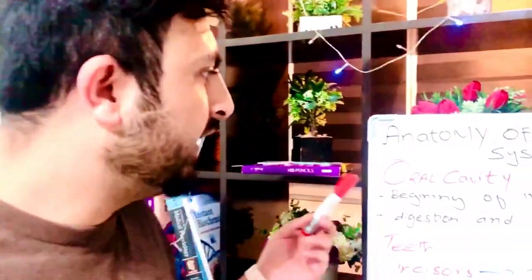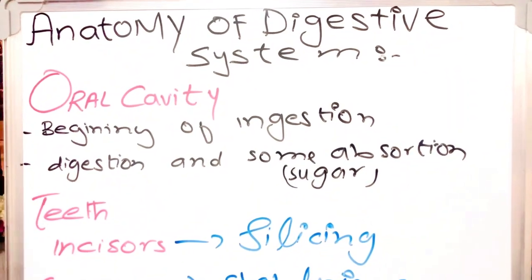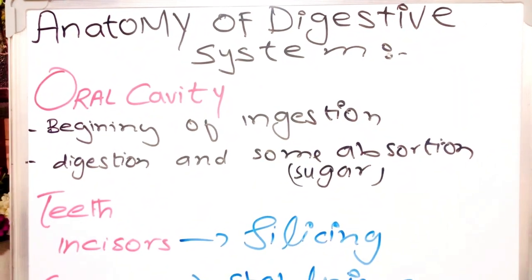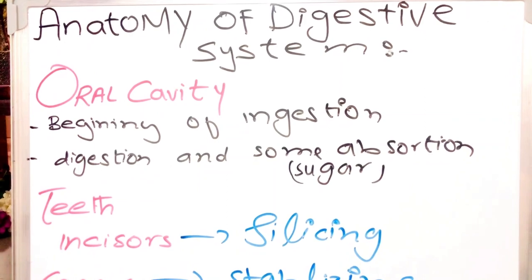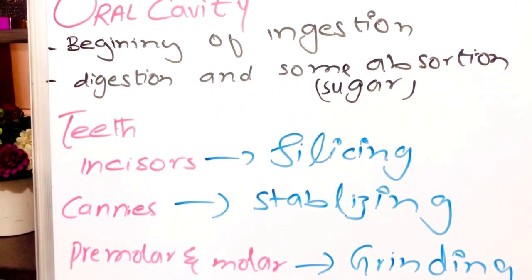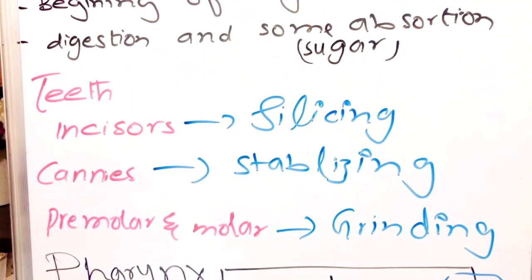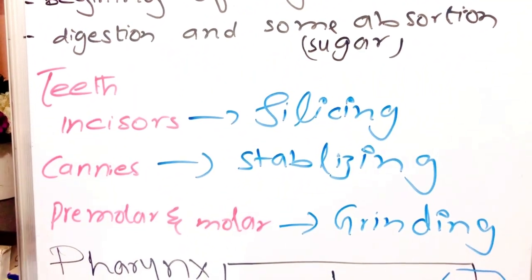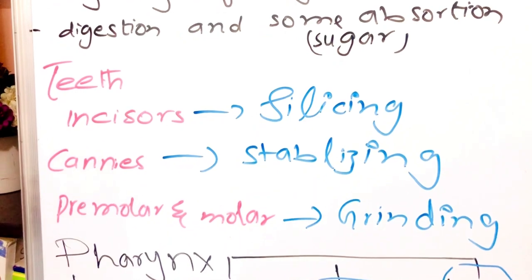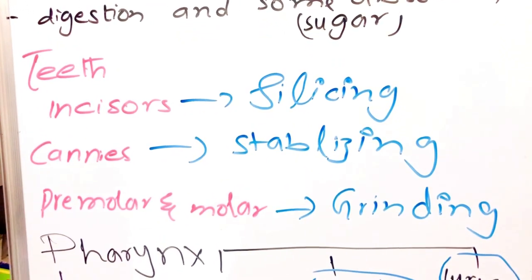The oral cavity is the first part of the GIT tract. Ingestion begins here, along with some digestion and absorption — for example, the absorption of sugars occurs in the oral cavity. We have different kinds of teeth: incisors do the slicing of food, canines stabilize the food, and premolars and molars do the grinding of food.